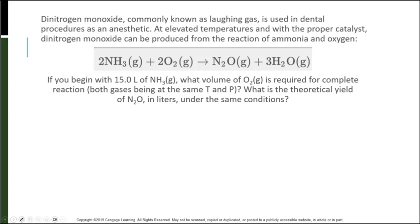Dinitrogen monoxide, commonly known as laughing gas, is used in dental procedures as an anesthetic. At elevated temperatures and with the proper catalyst, dinitrogen monoxide can be produced from the reaction of ammonia and oxygen as follows. If you begin with 15 liters of NH3, what volume of oxygen is required for complete reaction? What is the theoretical yield of N2O in liters under the same conditions?